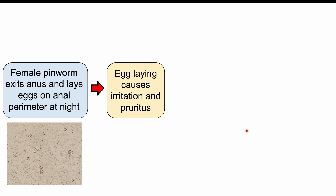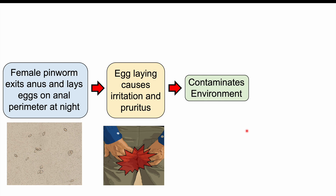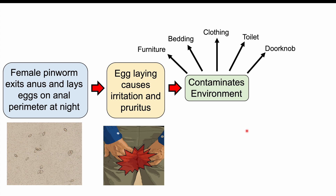That egg laying causes irritation and pruritus — an itching, prickly, tingling sensation in the anal region, especially at night or early morning hours. Because of this, the patient will scratch at that location, contaminating the surrounding environment. Eggs can contaminate clothing, bedding, furniture, toilet, and doorknobs. Eggs can also be transmitted during sexual contact, although this is more rare.